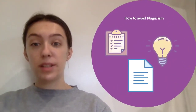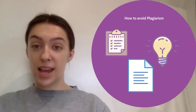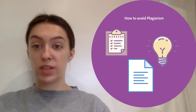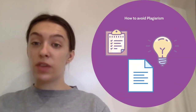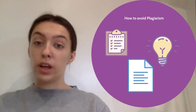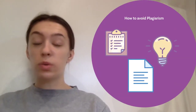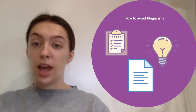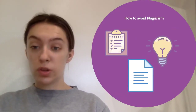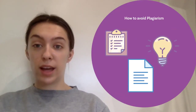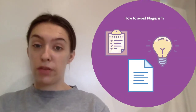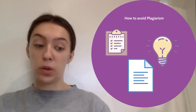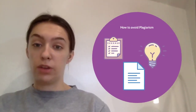There are some simple steps that you can take to avoid plagiarism. For example, you could keep a record of everything that you read as you go. You could use your own words and ideas where possible, and if you do use other people's words or ideas, you can make sure that you acknowledge all material used in your references, which we'll cover later on.